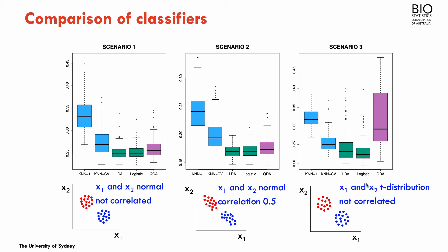In the third setting, similar to the first but with x1 and x2 following a t-distribution rather than a normal distribution — giving heavier tails — LDA performs slightly worse than logistic regression, because LDA assumes normality and the t-distribution violates this assumption. Quadratic discriminant analysis seems quite affected by this. KNN with one neighbor still performs poorly, but KNN with the optimal number of neighbors performs reasonably well.